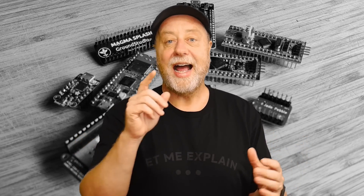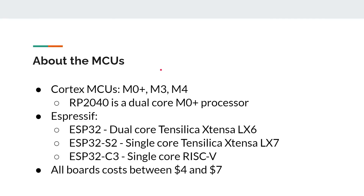Let's look at how I'm doing the testing and then dive into the numbers. We're going to be testing some Cortex MCUs — the M0+, the M3, the M4. We're going to use the Raspberry Pi Pico, which has the RP2040 processor — a dual core M0 Plus setup. We're also using chips from Espressif, a Chinese fabless chip manufacturer. We'll use the dual core Xtensa LX6 in the normal ESP32, the ESP32 S2 with a single core LX7, and the ESP32 C3, their single core RISC-V processor. All these boards cost between $4 and $7, roughly the same price point.